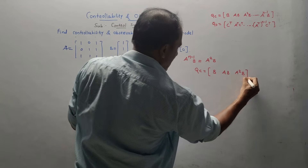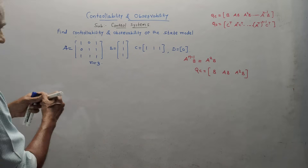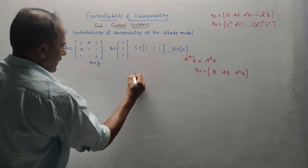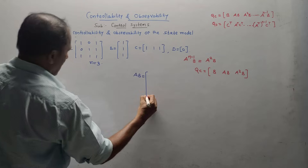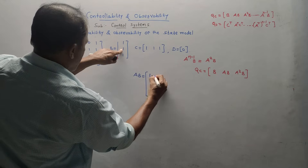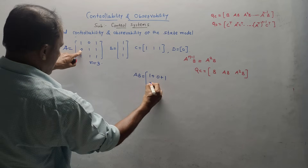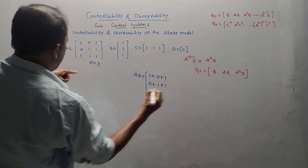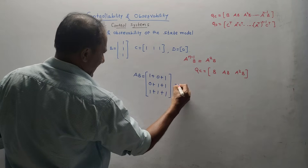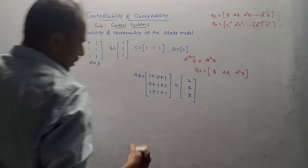Now we have to do the calculation till A raised to N minus 1 into B. Value of N is 3, so last term must be A squared B since 3 minus 1 is 2. Let us calculate matrix A into B. Performing the multiplication: first row — 1 into 1 is 1, 0 into 1 is 0, 1 into 1 is 1, giving 1 plus 0 plus 1 equals 2. Second row — 0 into 1 plus 1 into 1 plus 1 into 1 gives 2. Third row — all values 1 so 1 plus 1 plus 1 gives 3. So matrix AB is [2; 2; 3].